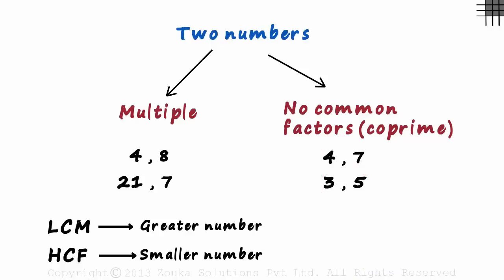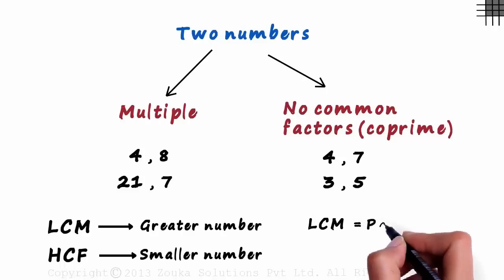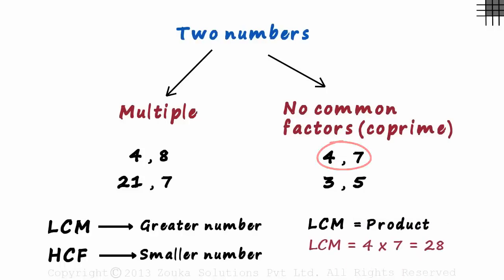What is so special about LCM and HCF of such numbers? Well, the LCM of such numbers will always equal the product of the two numbers. For the first pair, the LCM will be 4 times 7 which equals 28.